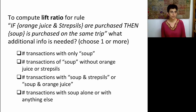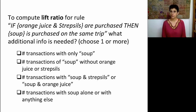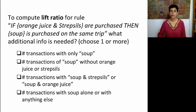Let's see if you can compute the lift ratio for the same rule: if orange juice and strep cells are purchased, then soup is purchased on the same trip. Think about whether the information we have so far is sufficient for computing the lift ratio, and if not, which additional piece of information is needed in order to do the computation.